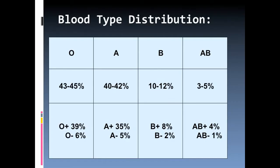Here's a quick chart of blood type distribution, just to give you an indication of which blood types are most and least common. Looking at the chart, the majority of the population — almost 50% — O and A are very close. 43% to 45% of the people have blood type O, 40% to 42% A, 10% to 12% is B, and then the rarest, least common, is 3% to 5% with AB.